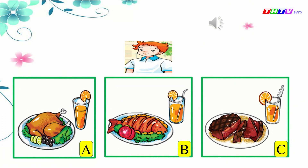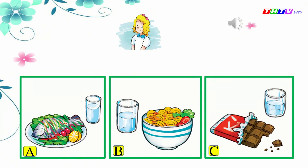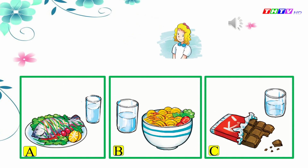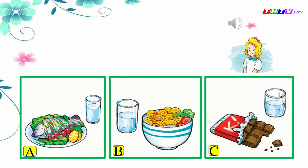Well done. The last one. Look, this is Linda. What would she like to eat and drink? What would you like to eat? I'd like a bar of chocolate, please. What about a drink? Can I have a glass of water, please? Yes, of course. Just a minute. All right. So, the answer is A, B, or C? Yes, C. A bar of chocolate and a glass of water.